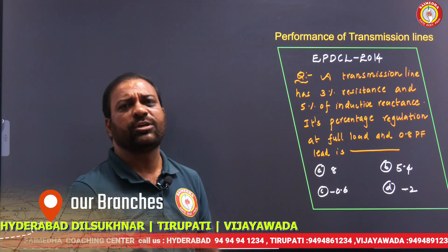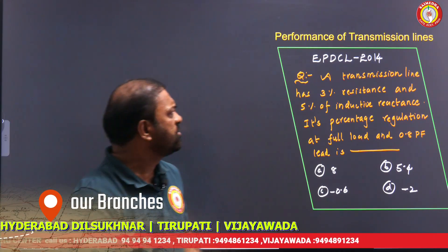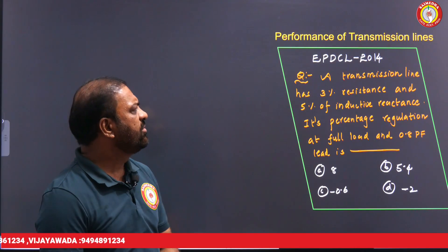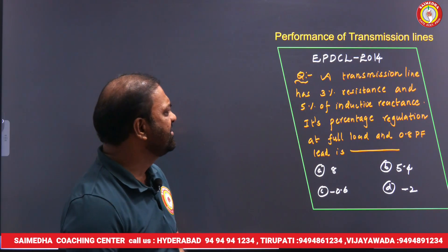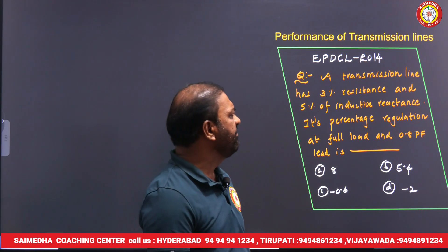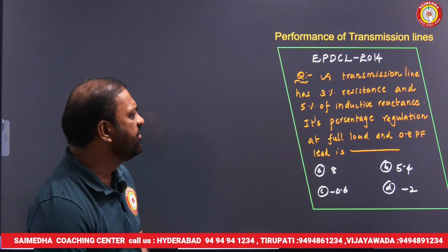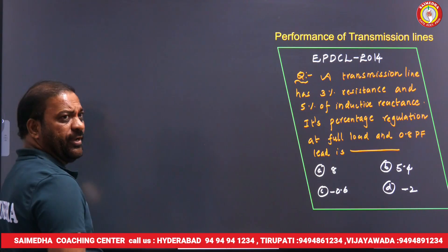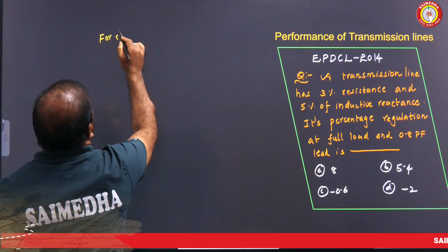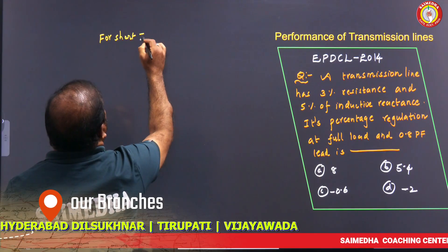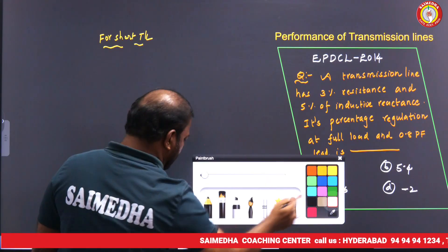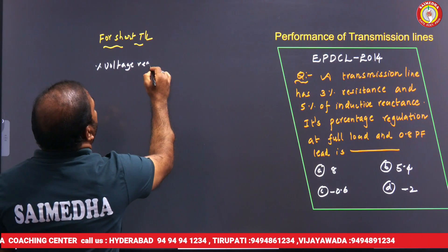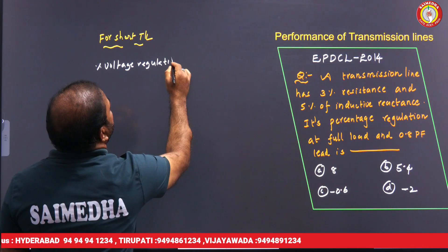This question was also asked in EPDCL 2014. A transmission line has 3% resistance and 5% inductive reactance. Find its percentage regulation at full load and 0.8 leading power factor. For a short transmission line, the percentage voltage regulation is given by (Vs - Vr) / Vr × 100.